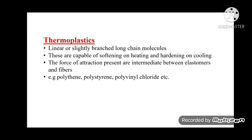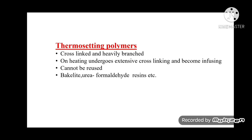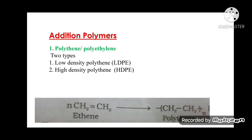Thermoplastics are linear or slightly branched long-chain molecules capable of softening on heating and hardening on cooling. The forces of attraction are intermediate between elastomers and fibers. Examples include polythene, polystyrene, and polyvinyl chloride. Thermosetting plastics are cross-linked and heavily branched polymers which undergo extensive cross-linking on heating and become infusible and cannot be reused. Examples include Bakelite and urea-formaldehyde resin.